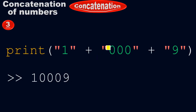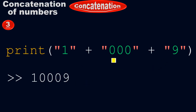I brought all 3 numbers together to make a single number because of concatenation — 1 is here, 0.00 is here, and 9 is here. No matter how many numbers you want to concatenate, you can do so as long as you put the quotes and also the addition operator. Don't miss the addition operator.